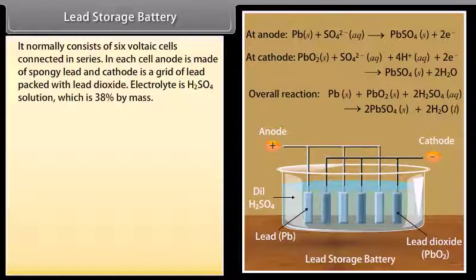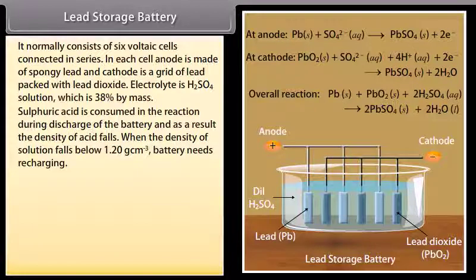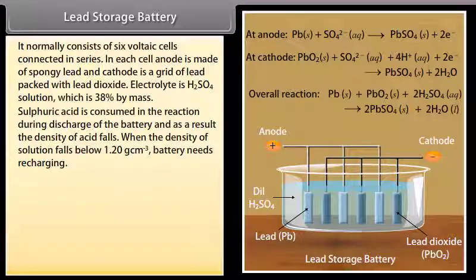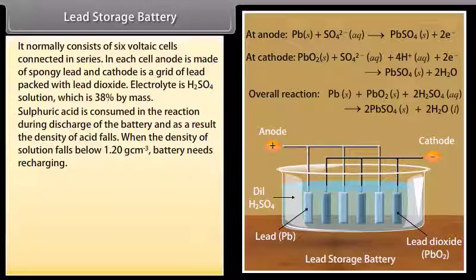Lead storage battery: It normally consists of 6 voltaic cells connected in series. In each cell, anode is made of spongy lead and cathode is a grid of lead packed with lead dioxide. Electrolyte is H2SO4 solution which is 38% by mass. Sulfuric acid is consumed in the reaction during discharge of the battery and as a result the density of acid falls. When the density of solution falls below 1.20 gram centimeter raised to the power minus 3, battery needs recharging.